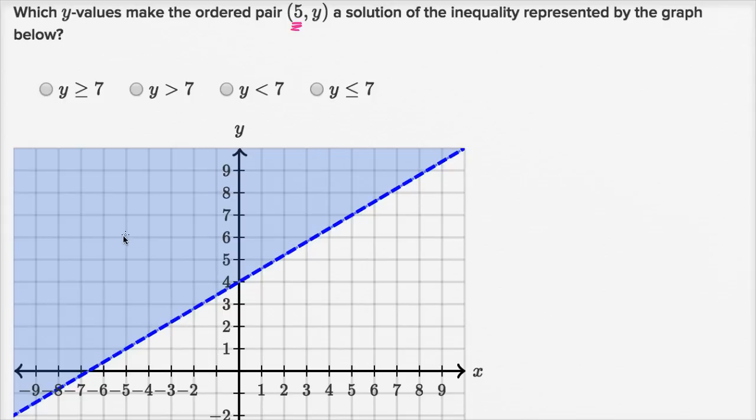And so to be a solution, that means we have to be in this blue area. So this pair, so (-5, 6), that would be a solution to the inequality being depicted. Something that sits exactly on the line, this would not be a solution.